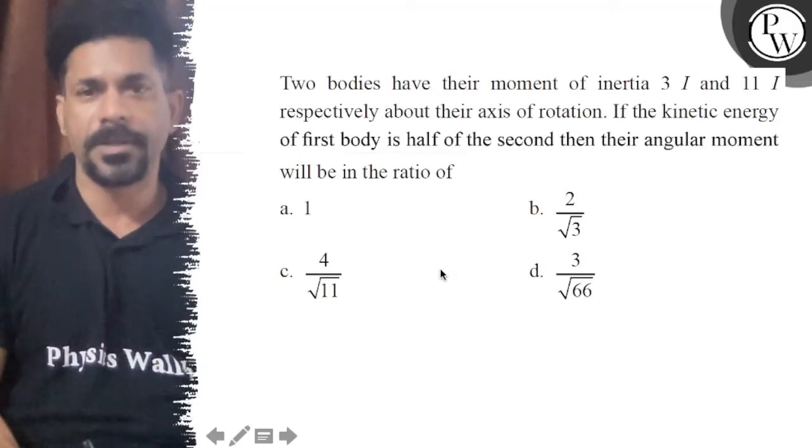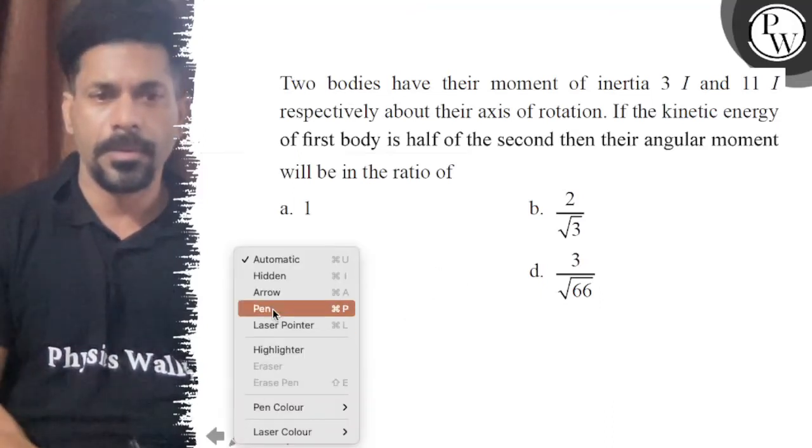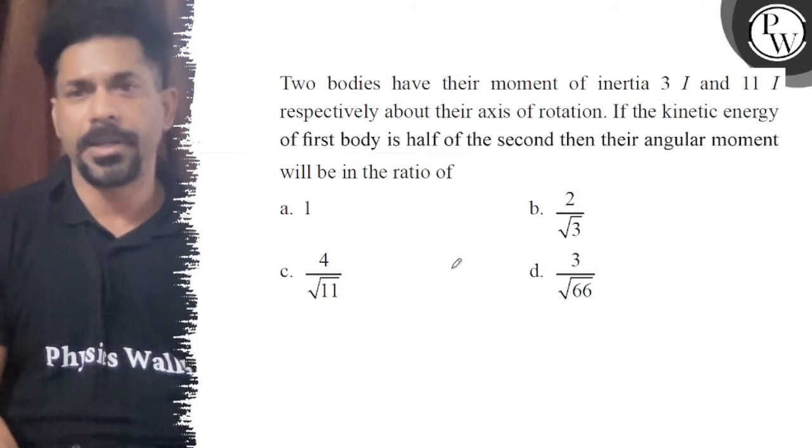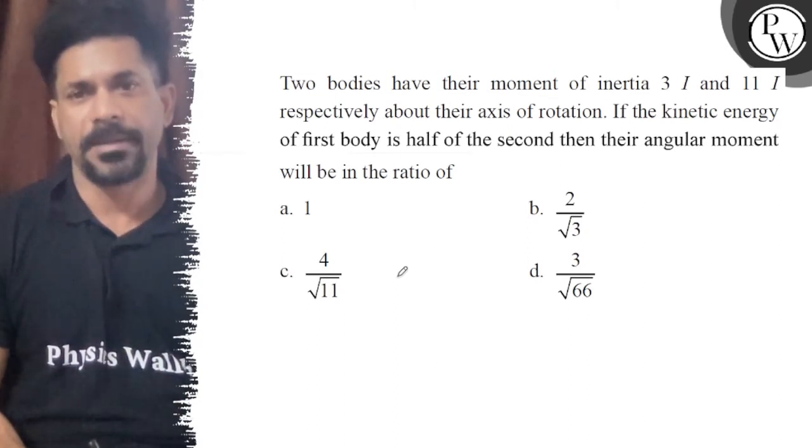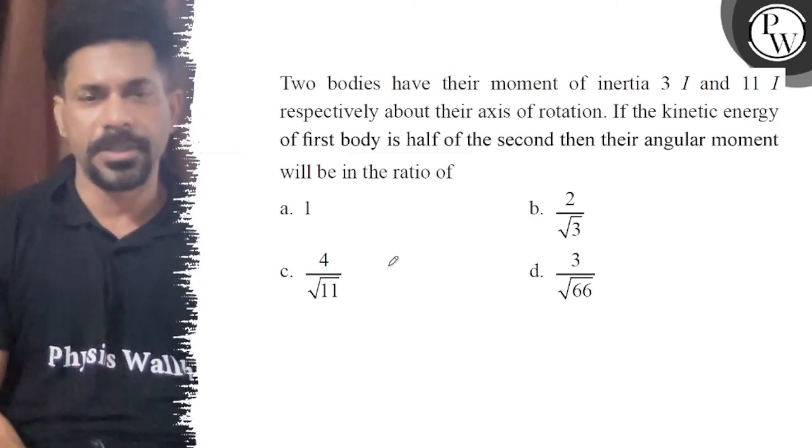Hello, let's see the question. Two bodies have their moment of inertia 3I and 11I respectively about their axis of rotation. If the kinetic energy of the first body is half of the second, then their angular momentum will be in the ratio of